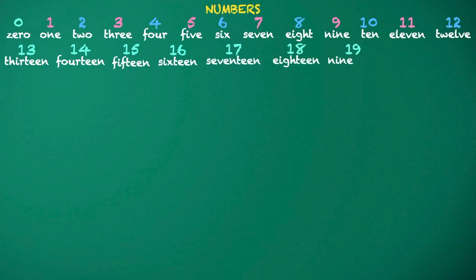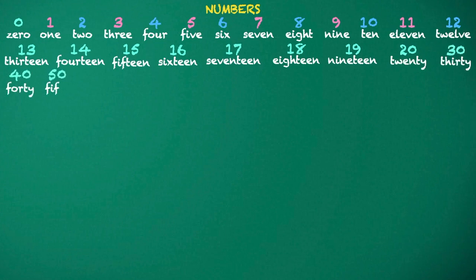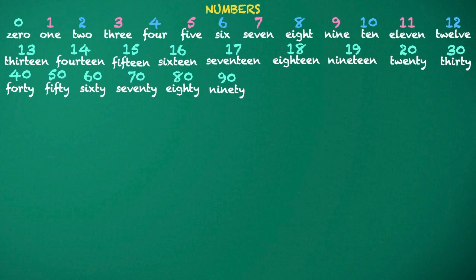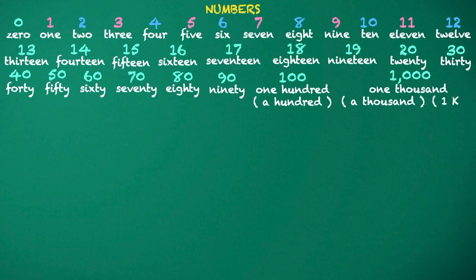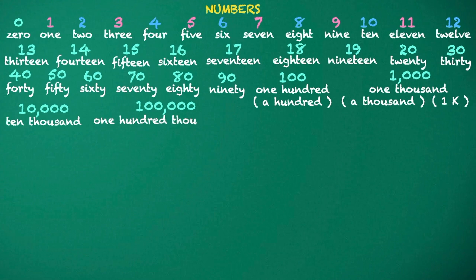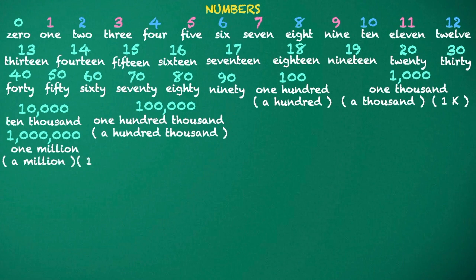19, 20, 30, 40, 50, 60, 70, 80, 90, 100. 1,000. 1K. 10,000. 100,000. 1,000,000. 1M.